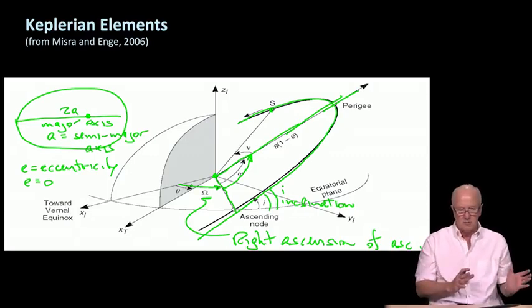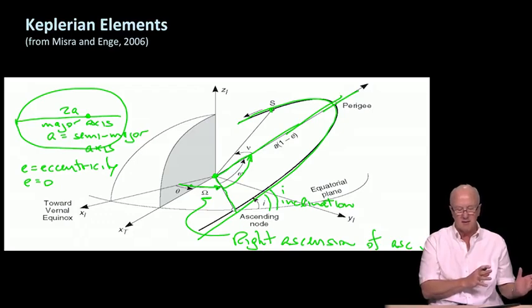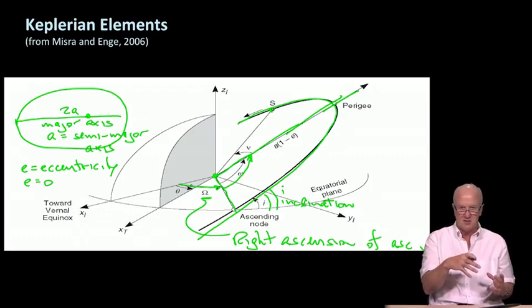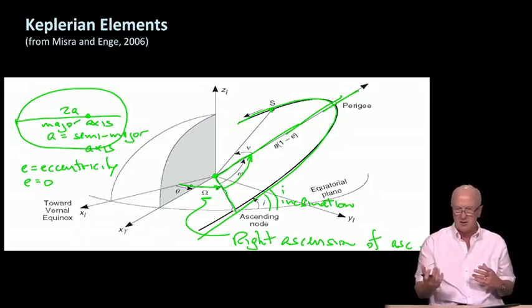So to review, to describe the shape of the orbit, we have A, the semi-major axis, and E, the eccentricity. To orient or fix the orbit relative to the Earth, we have the inclination, lowercase i, the right ascension of the ascending node, capital omega, and the angle of perigee, lowercase omega.